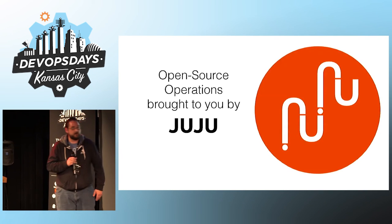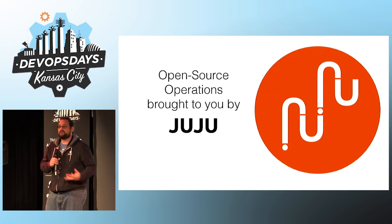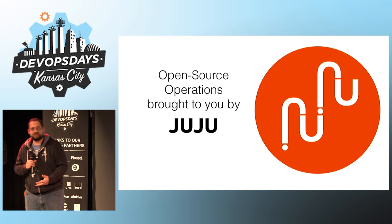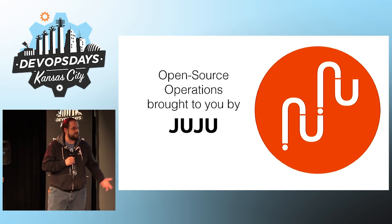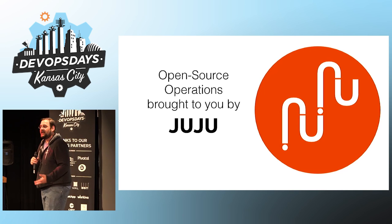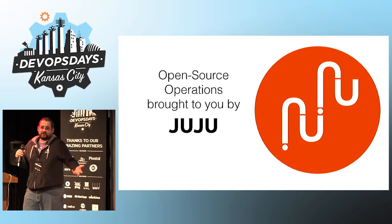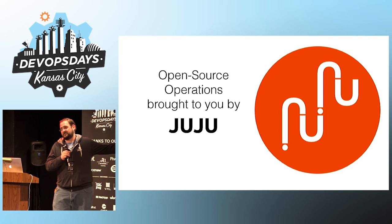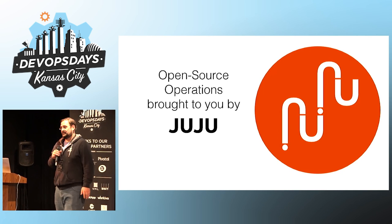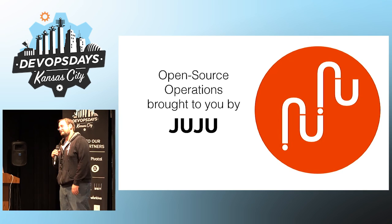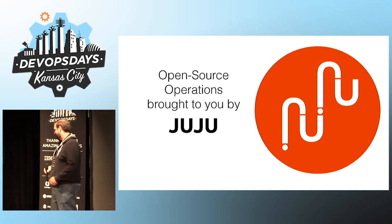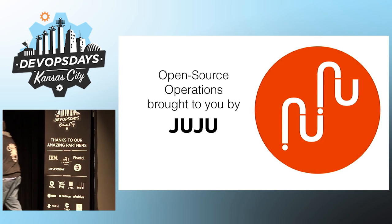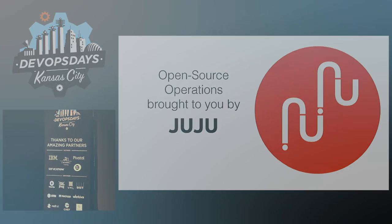As you go back into your workplace, I challenge you to start thinking about how you would model your operations and how you're going to distribute that information to other people in your organization. If you're super curious about how we're doing it, you can come check us out at Juju — just Google JujuCharms.com. And that's all I got. Thank you.